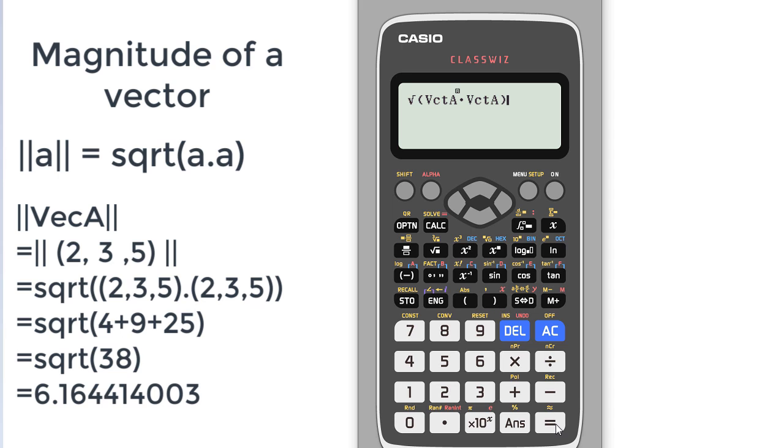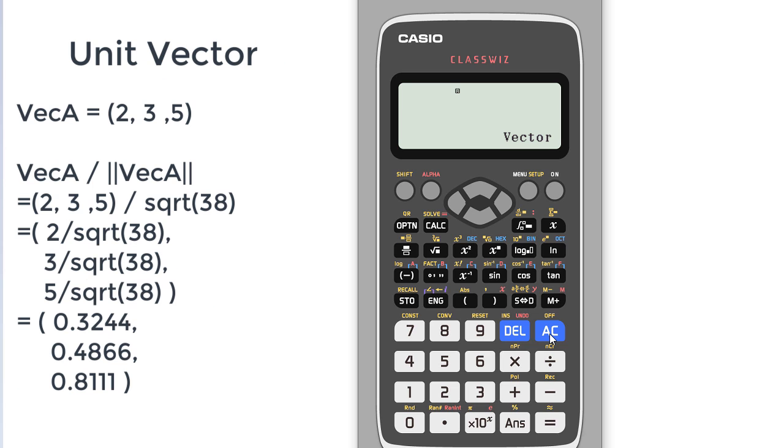So let's find the unit vector. Again, we will put the options and next page. Here it is written unit vector at 4. I will apply 4 and the bracket will be A. Now I have to put the vector which I need the unit, and let's say we select vector A, bracket close, and I get the unit vector.